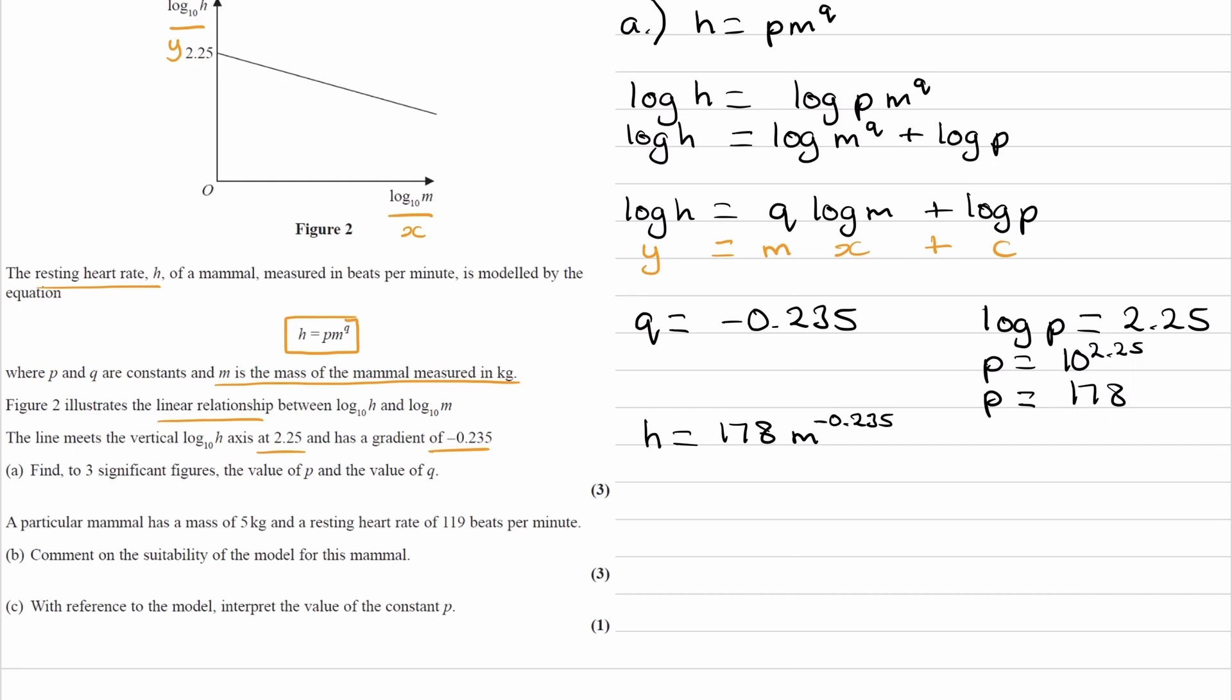So then for part b, we're told that a mammal has a mass of 5 kilograms. It has a resting heart rate of 119 beats per minute. So comment on the suitability of the model for this mammal. So for this one, think about the equation that we've just worked out. Think about the two numbers that we have and see if it fits.